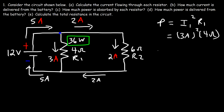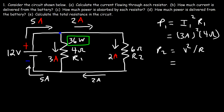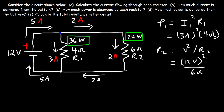Now let's focus on R2. I'm going to use the equation V squared divided by R. In a parallel circuit, the voltage across each resistor is the same — it's equal to the voltage of the battery. So we have 12 volts across that resistor, divided by R2 which is 6 ohms. 12 squared divided by 6: 144 divided by 6 gives us 24 watts used by this resistor.